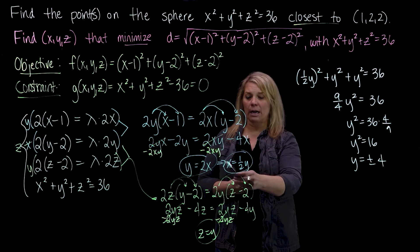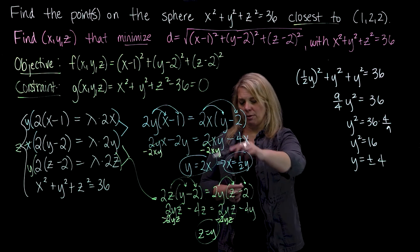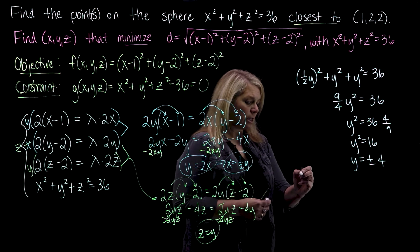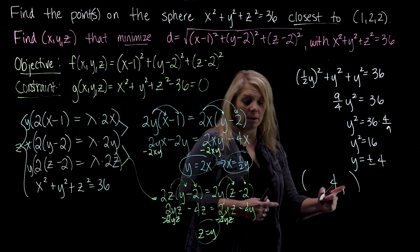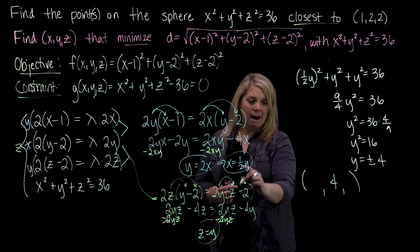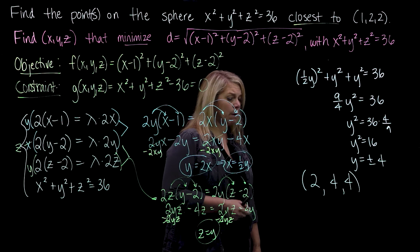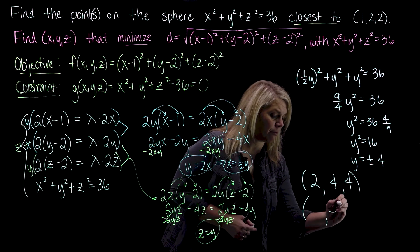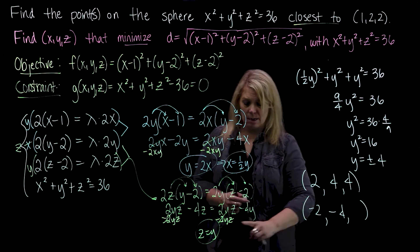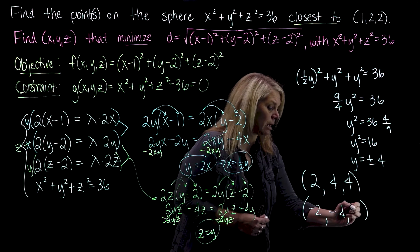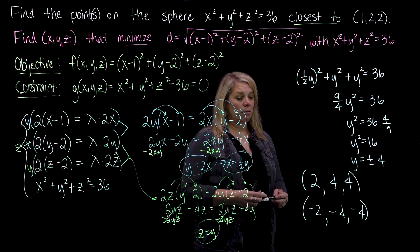When y = 4, x = (1/2)(4) = 2 and z = y = 4, giving the point (2, 4, 4). When y = −4, x = (1/2)(−4) = −2 and z = −4, giving the point (−2, −4, −4). So two points fell out of the algebra, and we need to determine which one satisfies what we're looking for.